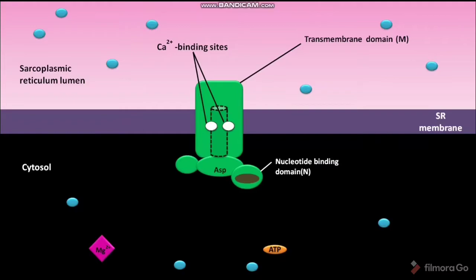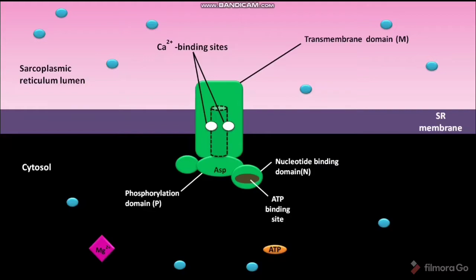The second domain is called the nucleotide binding domain, denoted as capital N. It is present in the cytosol. The nucleotide binding domain has an ATP binding site. The third domain is called the phosphorylation domain, denoted as capital P.